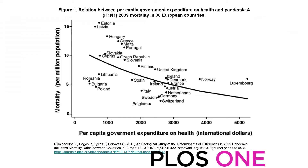This is another example where they looked at per capita government expenditure on health and mortality at the country level. You can see that Luxembourg has the highest per capita government expenditure on health and quite low mortality per million population. On the other hand, if you look at Estonia and Latvia, the per capita government expenditure on health was quite low, while the mortality rate was quite high.